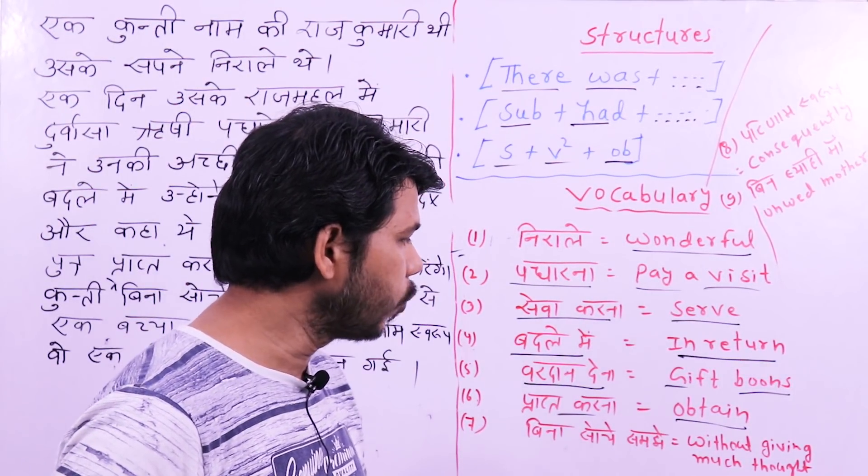Now: उसके सपने निराले थे। This can be formed in two ways. You can use the same structure: 'she had wonderful dreams.' Or you can say 'her dreams were wonderful.' Either way works for उसके सपने निराले थे.